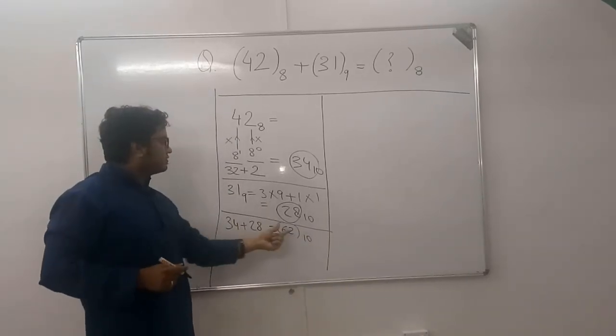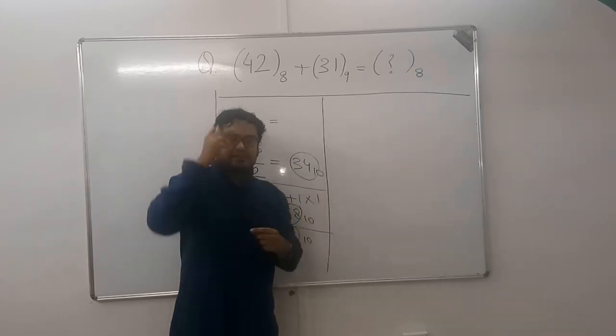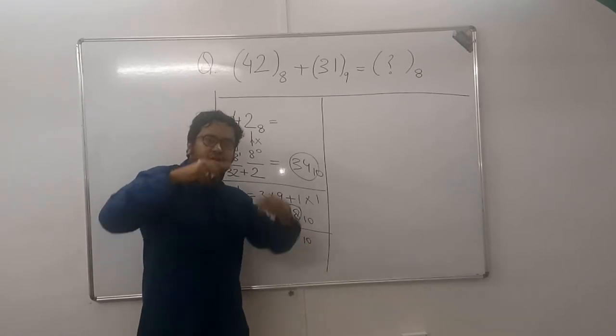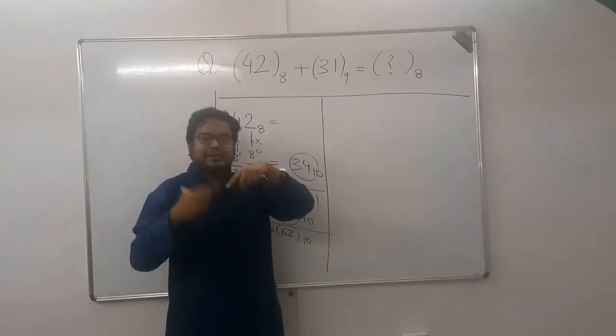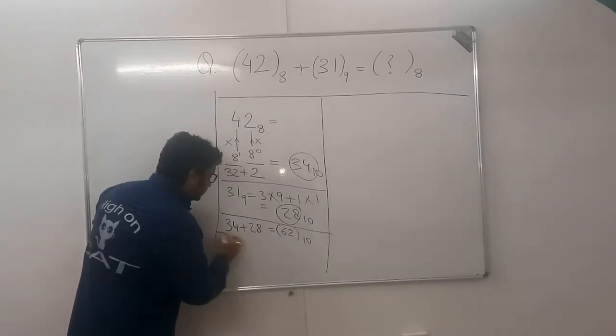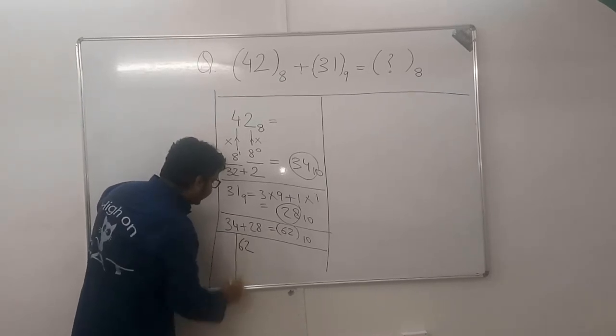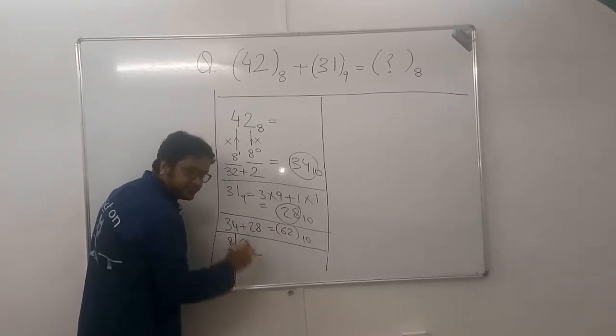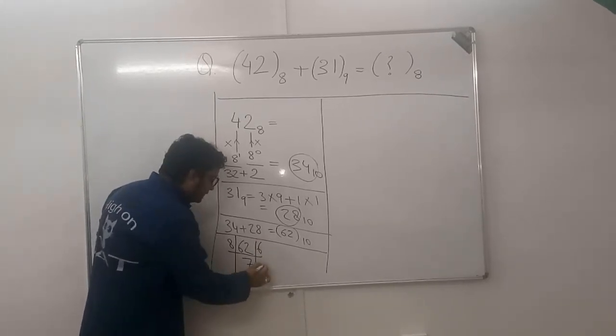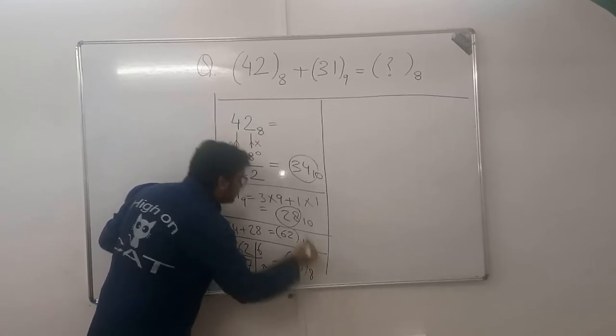Next step is converting this from base 10 to base 8. That is done by successive division, dividing the number time and time again, and then reading the remainders upside down. So 62 now has to be converted to base 8. So 62 by 8, 8 how many times? 7 times 8 is 56.